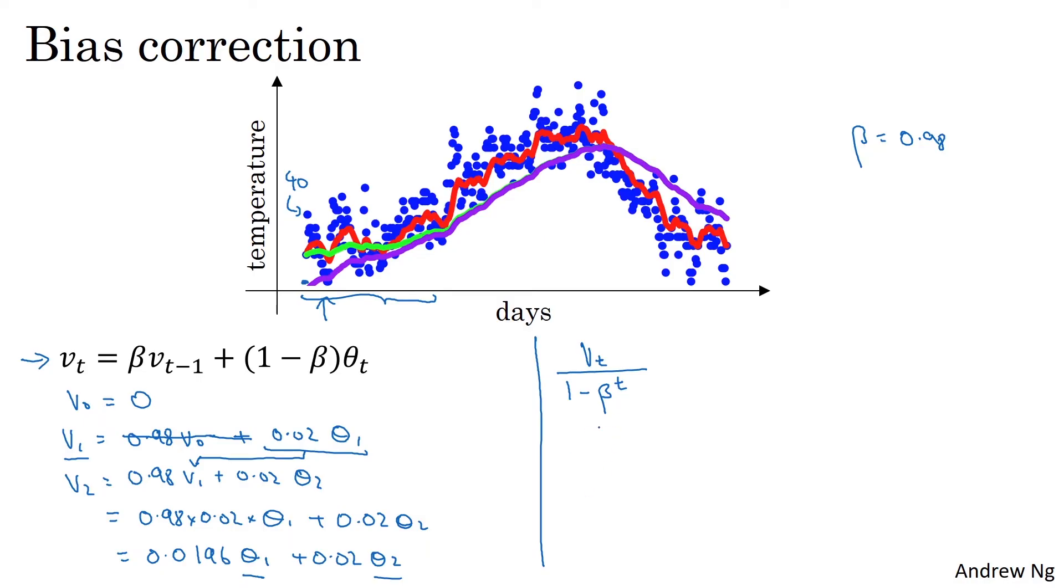So let's take a concrete example. When t is equal to 2, 1 minus beta to the power of t is 1 minus 0.98 squared. And it turns out that this is 0.0396. And so your estimate of the temperature on day two becomes V2 divided by 0.0396. And this is going to be 0.0196 times theta 1 plus 0.02 theta 2. You notice that these two things add up to the denominator 0.0396. And so this becomes a weighted average of theta 1 and theta 2, and this removes this bias.